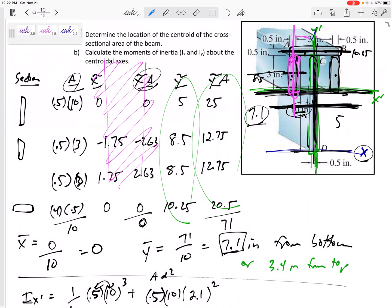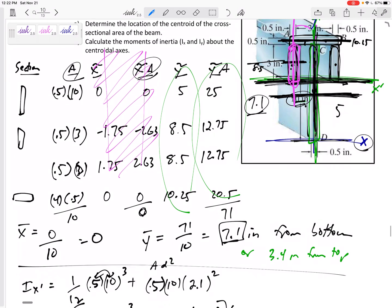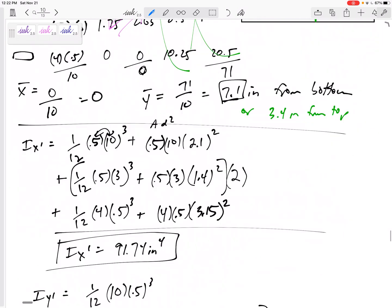For the centroid, if axes are not drawn on there for you, draw your own axes. Draw an axis, tell me where you're measuring from. You know, from the bottom left corner, the bottom middle, top right? Just draw your axes right there and find the centroid.